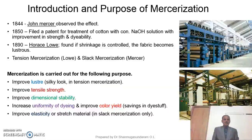Now let us see the introduction and purpose of mercerization. In 1844, John Mercer observed the physical changes that take place on cotton fabric while filtering caustic soda solution using cotton fabric as a filter. In 1850, he filed a patent for treatment of cotton with concentrated sodium hydroxide solution, with improvement in strength and dyeability. In 1890, Horace Loewy found that if shrinkage is controlled, the fabric becomes lustrous. So tensed mercerization was attributed to Loewy and slack mercerization to John Mercer.